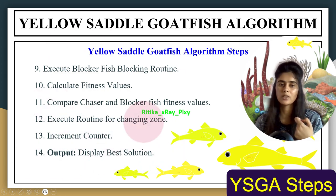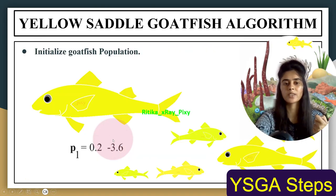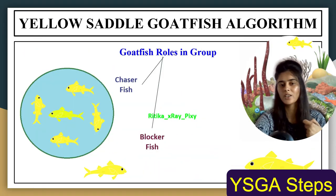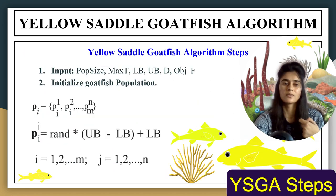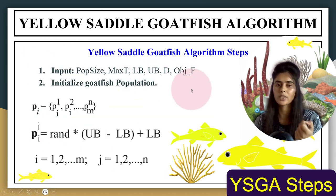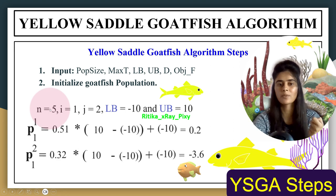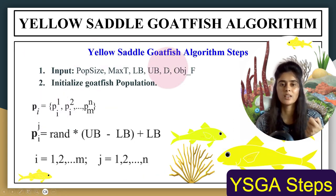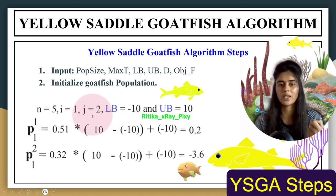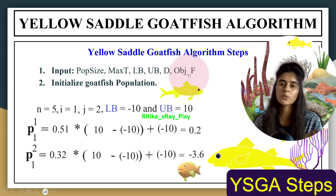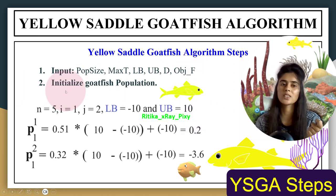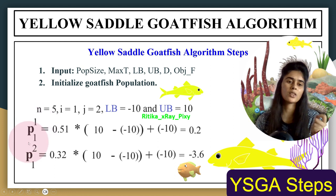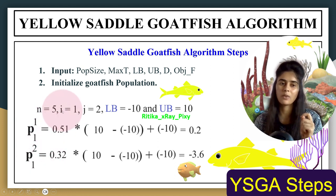Now we will go through the algorithm step by step using an example. Step 1: initialize all important parameters. Suppose we have five search agents, dimension equals two, lower bound is −10, upper bound is 10, and we use the sphere function as the objective function.